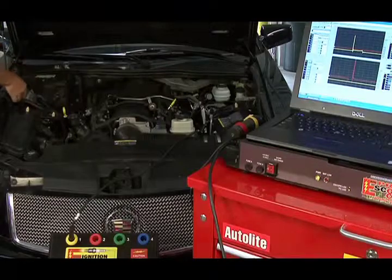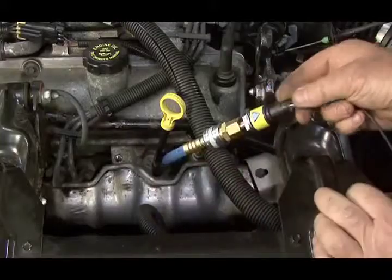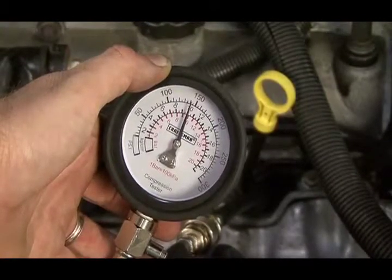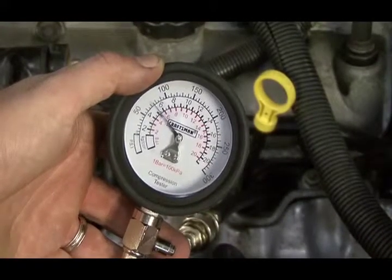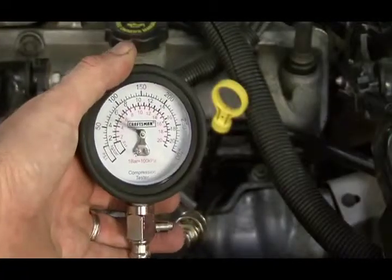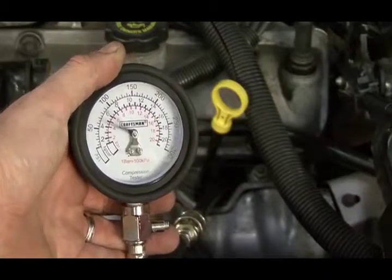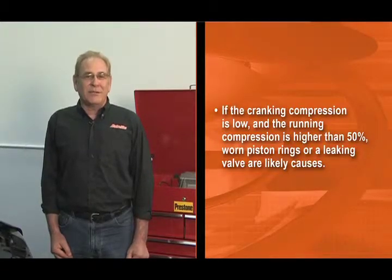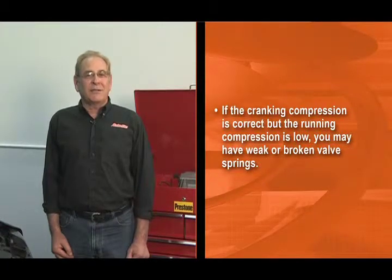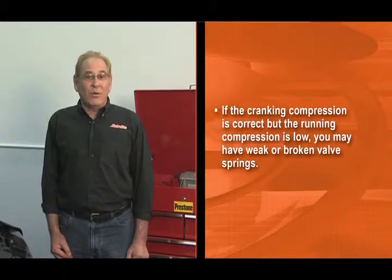There are many potential mechanical causes of misfires. Start by checking engine compression on the offending cylinder. This can be done with a big box analyzer or an oscilloscope and a high amp probe. If these diagnostic tools are not available, start your normal compression testing on just the cylinder that you detected the misfire on. Record the cranking compression reading. Then start the engine, bleed off the pressure in the gauge, and re-record the compression at idle — it should be 50% of the cranking compression. Now raise the engine off idle to 2500 RPM and bleed the gauge again. The compression should still be very close to 50% of the cranking measurement. If the cranking compression is low and the running compression is higher than 50%, worn piston rings or a leaking valve are likely causes. If the cranking compression is correct but the running compression is low, you may have weak or broken valve springs.